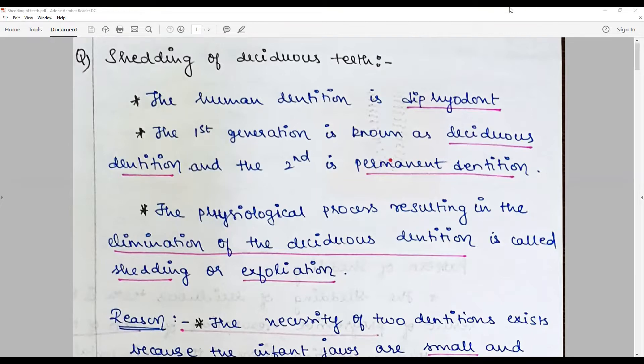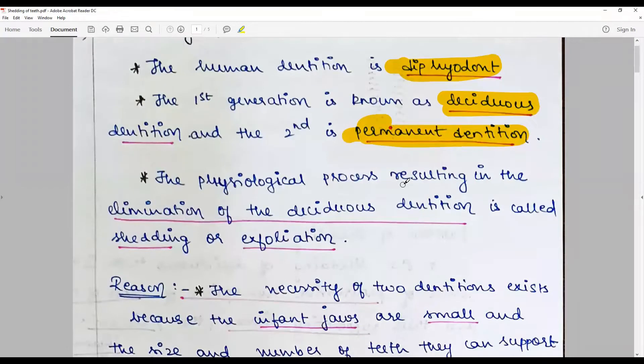We all know that human dentition is dihyphodont, meaning we have two sets of teeth: the deciduous teeth and the permanent dentition, with a transition phase called mixed dentition. The physiological process that results in the elimination of deciduous dentition is called shedding of teeth or exfoliation.